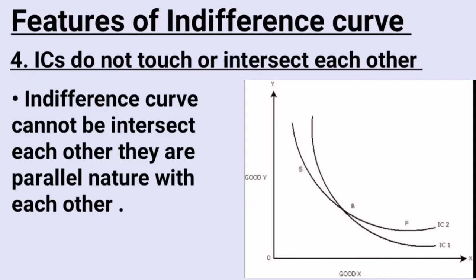The next feature is that Indifference Curves do not touch or intersect each other. In the graph, even though curves may appear close, they never intersect. Each Indifference Curve shows different combinations of goods, so the first curve will be different from the second. They are parallel in nature to each other and never intersect.